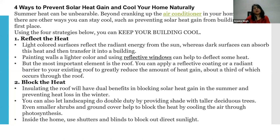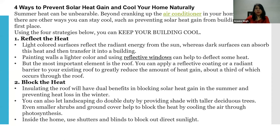Second, block the heat. Insulating the roof has dual benefits - blocking solar heat gain in summer and preventing heat loss in winter. You can use khas-khas sheets or other insulating materials available that help block solar heat gain. Let landscaping do double duty by providing shade with taller deciduous trees - even smaller shrubs and ground covers help block heat by cooling the air through photosynthesis. Use shutters and blinds on windows to block out direct sunlight and keep the house cooler.